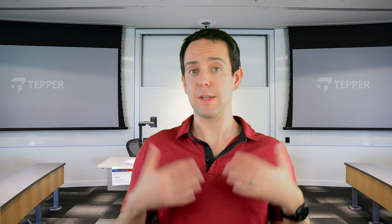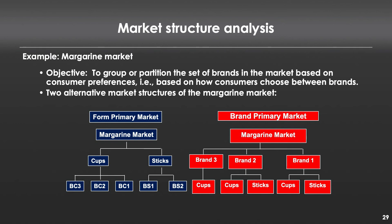This is another way to describe a marketplace — descriptive, not causal. How would you figure out which market structure applies? You can't really ask people directly, since most don't consciously know how they make these decisions. One option is a stock out: artificially create a stock out of, say, brand one's cups. Customers would come to the store, find brand one cups unavailable, and make a substitute choice. Would they choose brand two's cups or switch to brand one sticks? An increase in relative market share of either would tell you which decision structure consumers are engaging in.